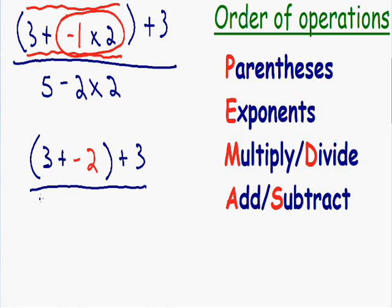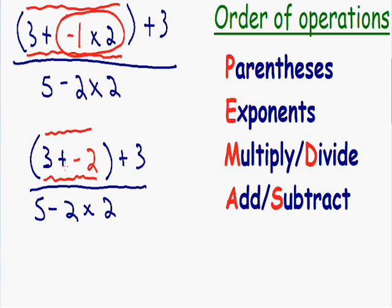In the denominator we have five minus two times two. We still haven't completely gotten rid of the inside of the parentheses, so we need to do that first. Inside the parentheses we don't have any exponents, and now we don't have any multiplication or division. So we can move on to our last order of operations, which is adding and subtracting. We can add three plus negative two. Three plus negative two is equal to positive one, and the rest of the expression stays exactly the same. We have a positive one plus three.